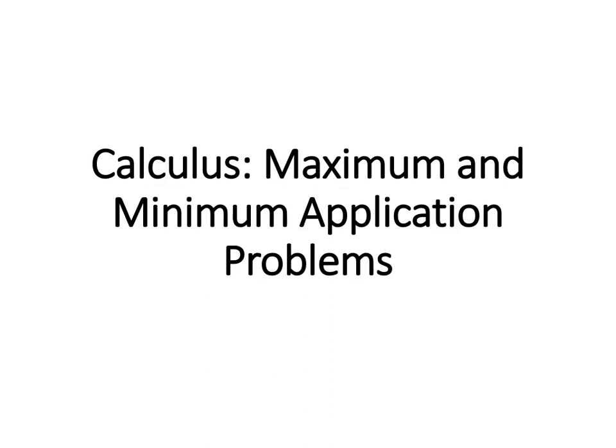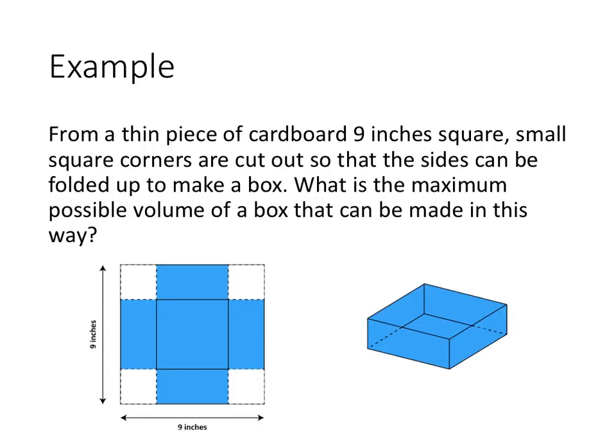In this video, we'll talk about some strategies for how to complete maximum and minimum application problems. We'll use this example: From a thin piece of cardboard 9 inches square, we're going to cut small square corners off the sides and then fold up the sides to make a box.